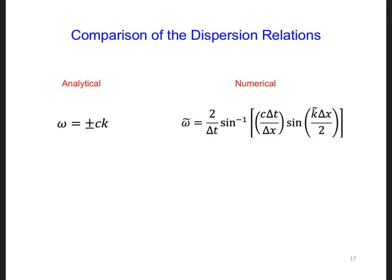This slide shows both the analytical dispersion relation we obtained earlier and the numerical dispersion relation we just derived now. The numerical dispersion relation does not show a simple linear relationship between the angular frequency and the wave number as we had for the analytical case. So what is the impact of this numerical dispersion relation not being the same as the analytical one?